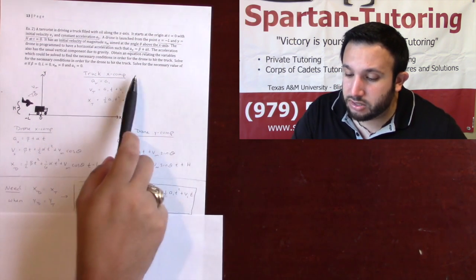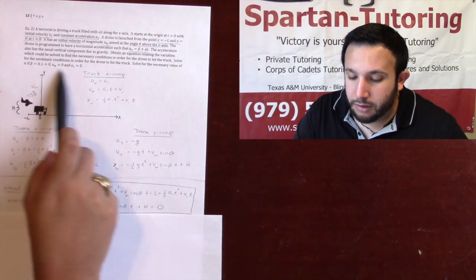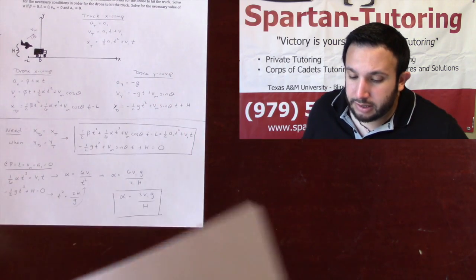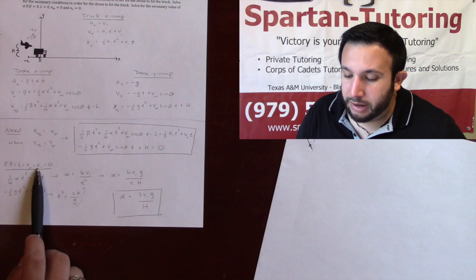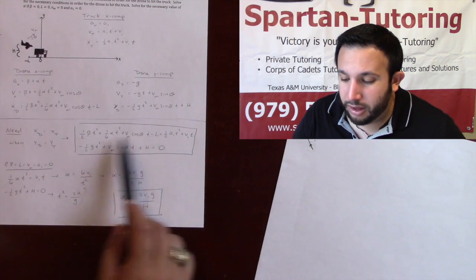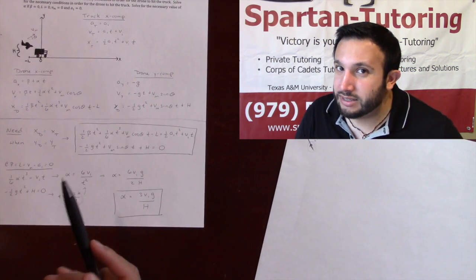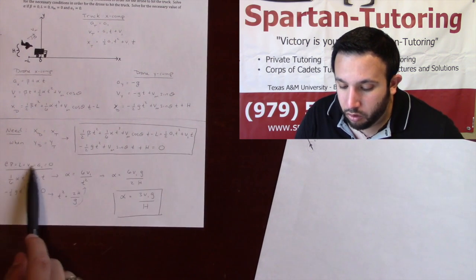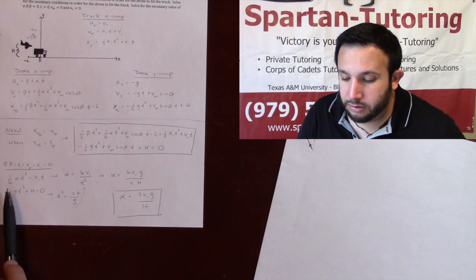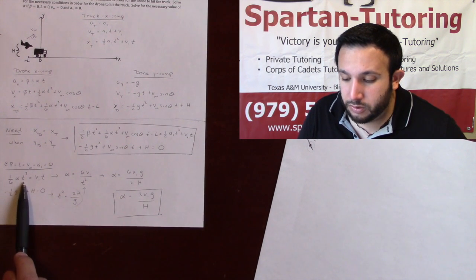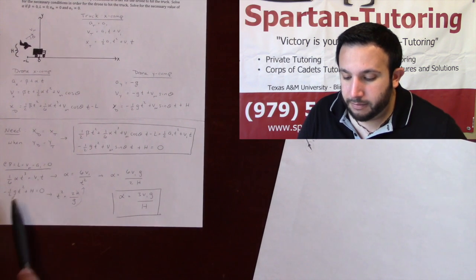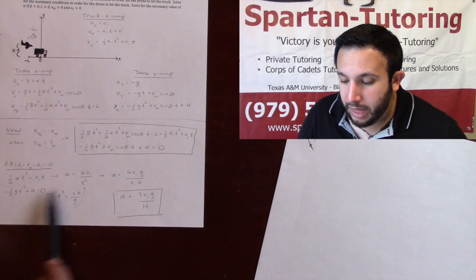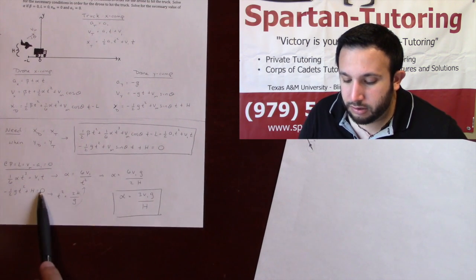But it did say solve for the necessary value of alpha if all of these values are zero. So let's go ahead and do that. And so, taking a look here, if I make beta, L, VM, and A1 all zero, a lot of stuff goes away. And what I'm left with is a system of equations. What you're going to have left over on this side after you plug zero into all of these values, you'll still have that one-sixth alpha t cubed. And on the right side, you'll still have that v1t. And then for the y component, you'll still have this negative one-half gt squared. And you'll still have that plus h. And that's still equal to zero.